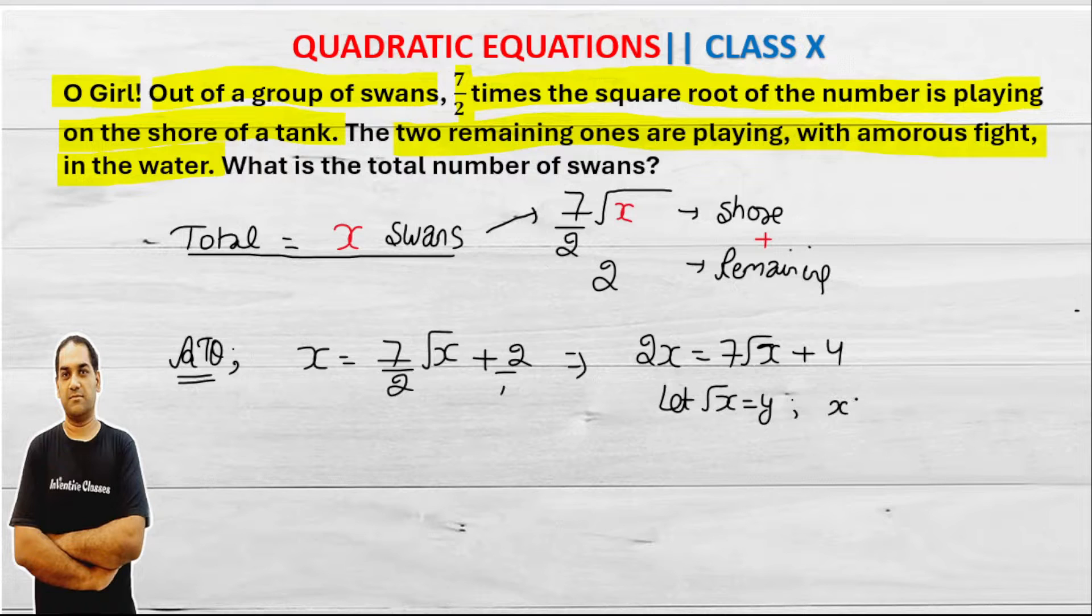Clearly both sides, if I see, then my x will become equal to y squared. And this equation converts to y squared equals 7y plus 4.